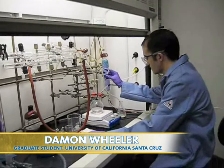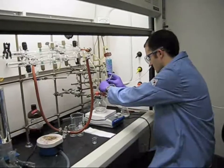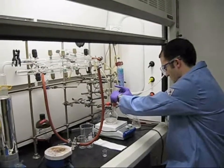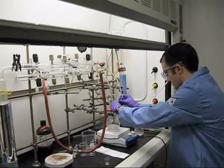Damon is beginning to make hollow gold nanoshells. To do this, he's going to use sodium borohydride to reduce cobalt two plus ions to cobalt zero nanoparticles. Watch as the solution turns dark brown in a few seconds.